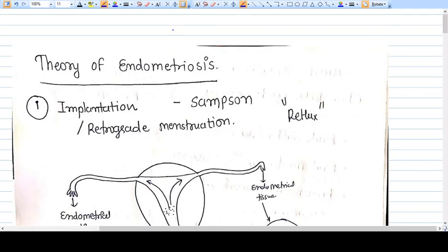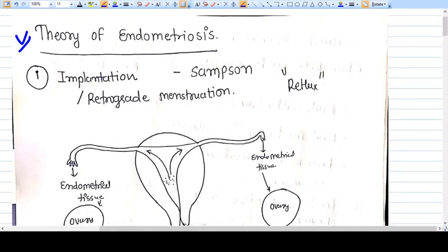In this video, we are continuing our series on endometriosis. In this segment, we will discuss the theories of endometriosis. There are various theories explaining why the endometrium has reached from the uterine cavity to various sites. The most accepted theory is the implantation theory or retrograde menstruation, proposed by Sampson.